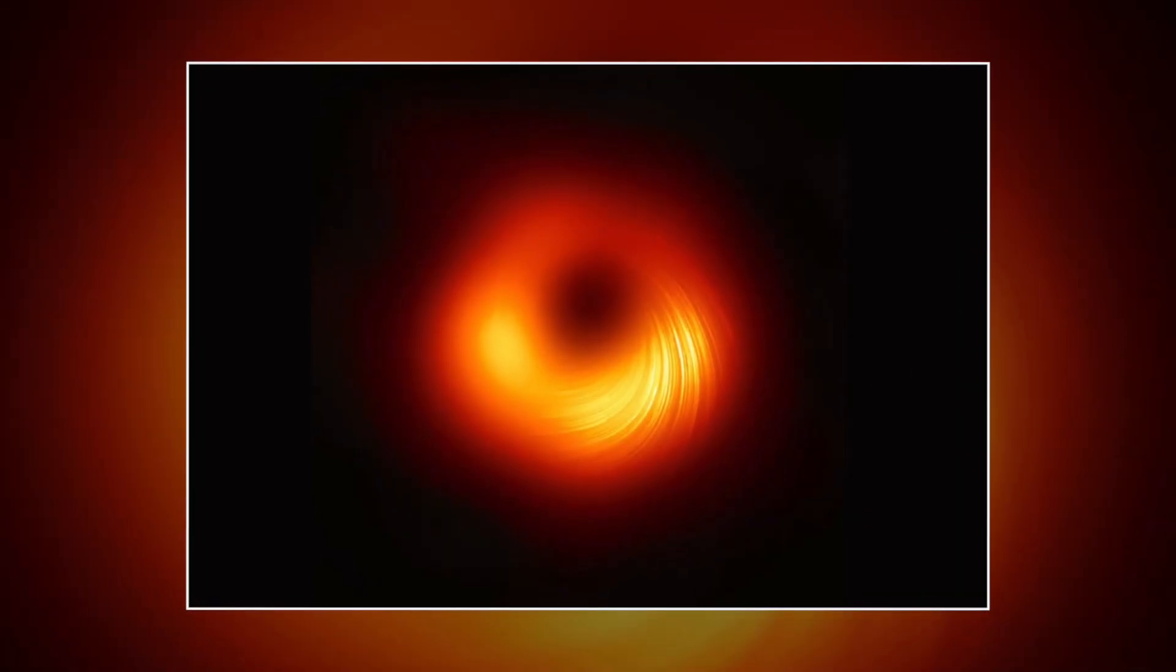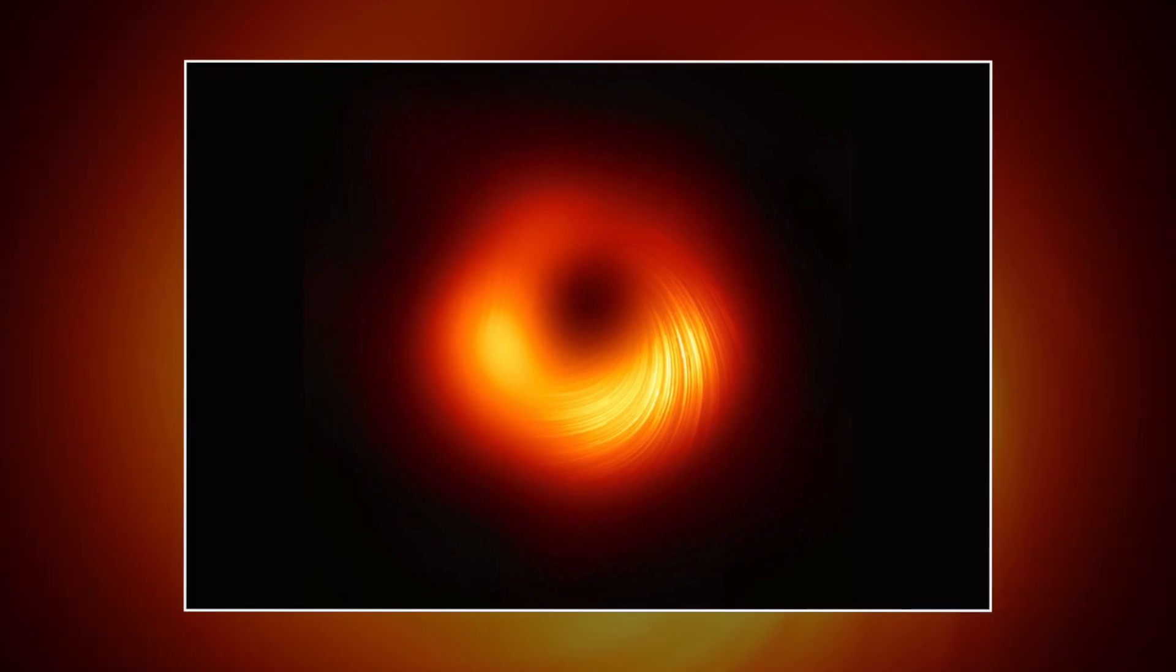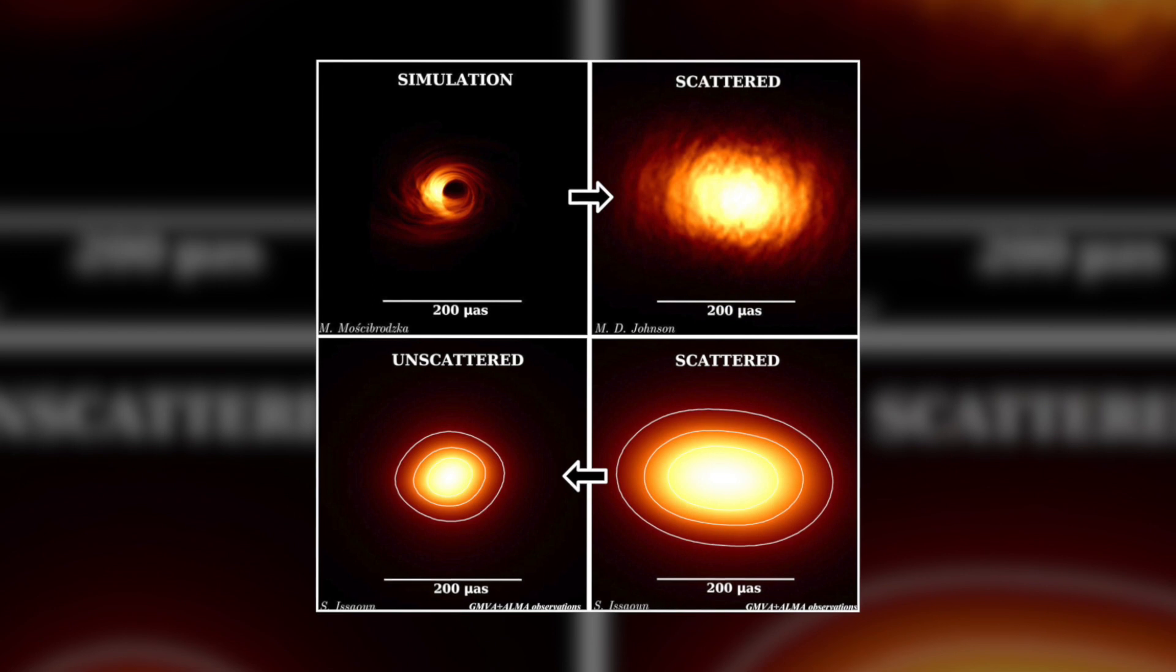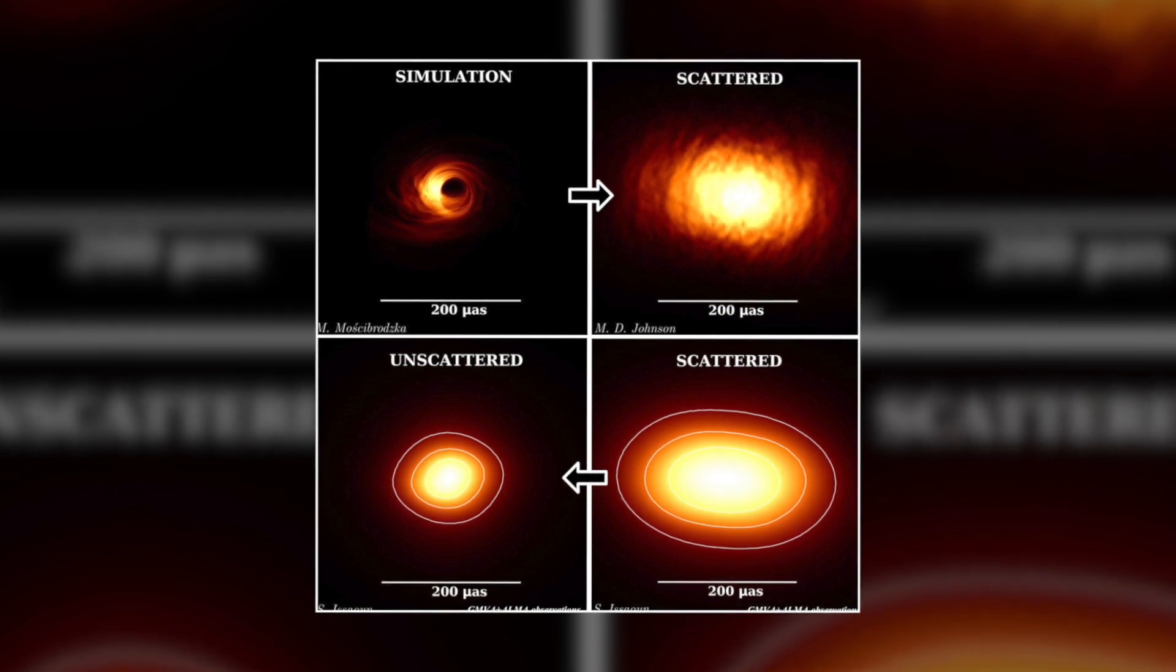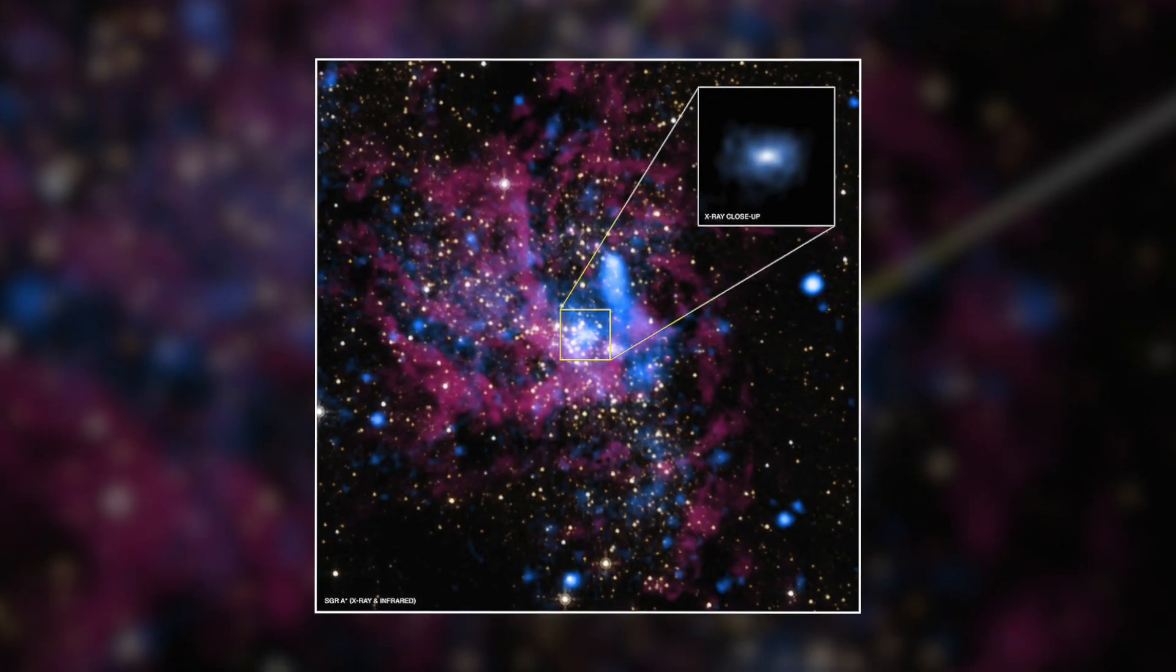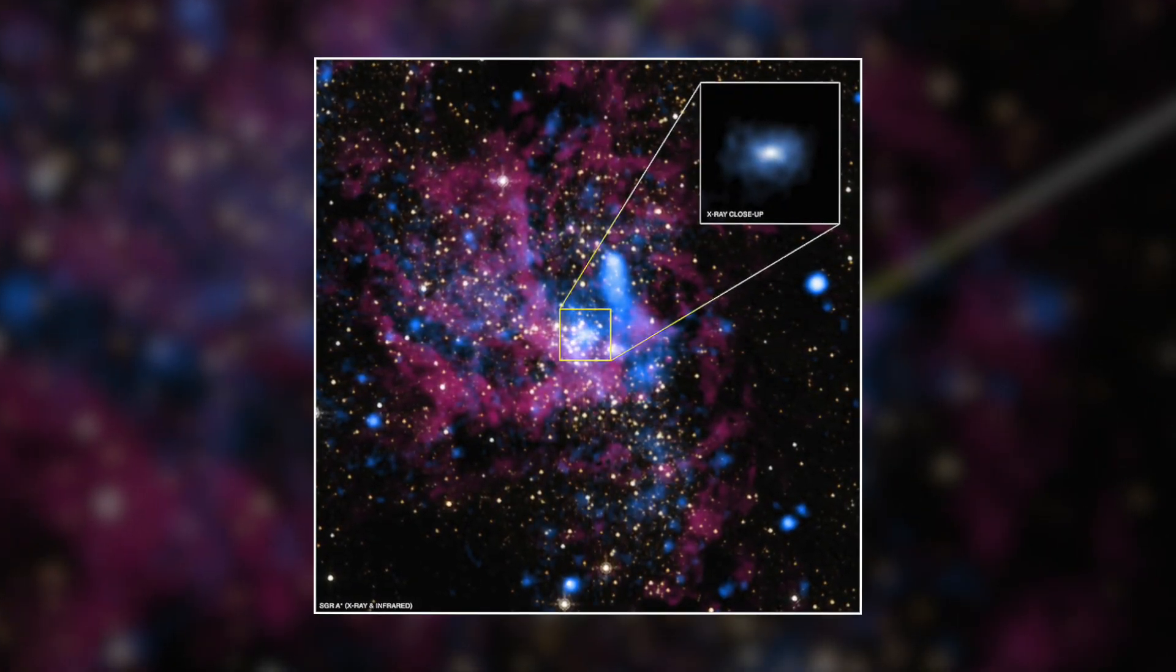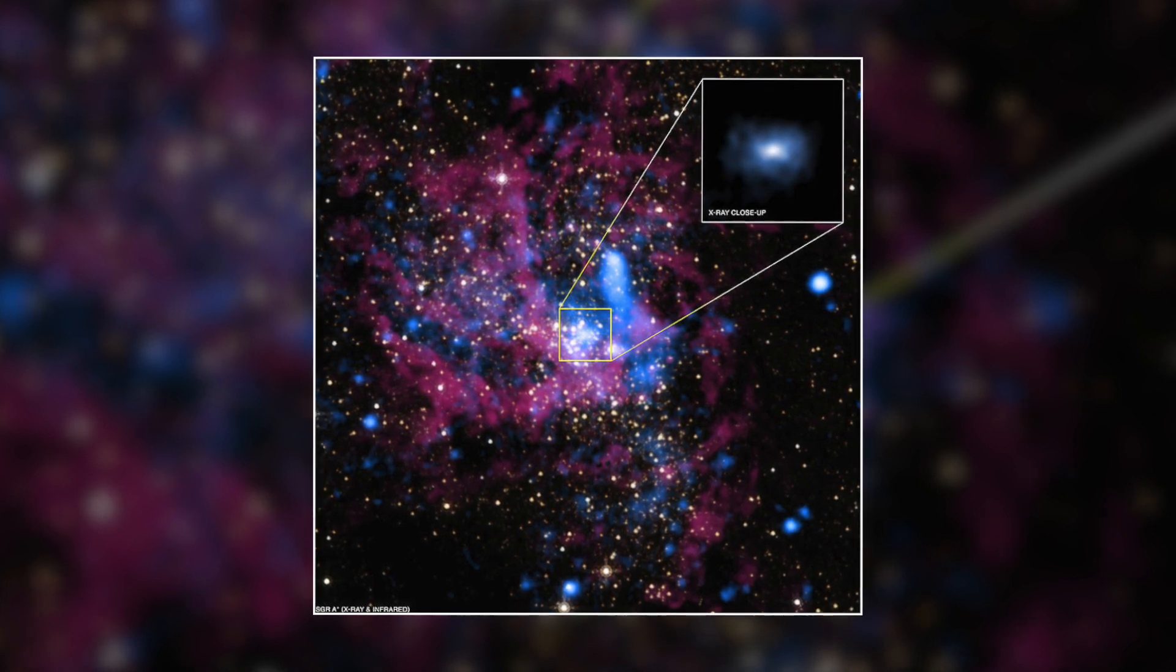Now, in 2022, scientists have revealed the first image of the supermassive black hole that squats at the center of our own galaxy. Named Sagittarius A, this black hole is no threat to us Earthlings, but it could help us understand how the Milky Way formed, as well as the strange physics that happened in and near black holes.